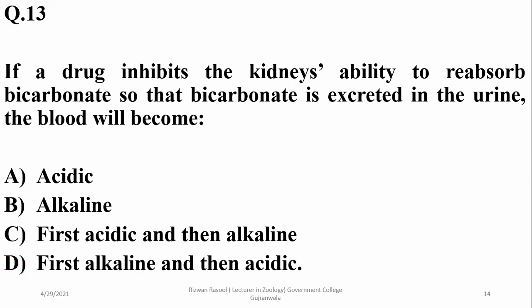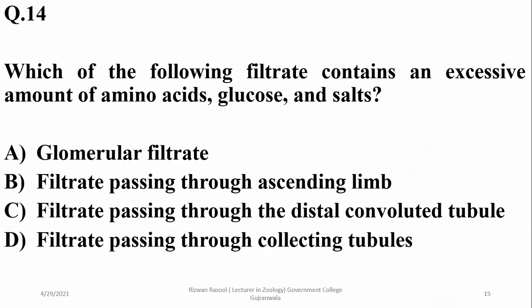If a drug inhibits the kidney's ability to reabsorb bicarbonate, so that bicarbonate is excreted in the urine, the blood will become more acidic due to the loss of bicarbonate ions.